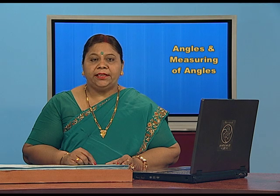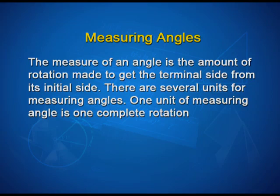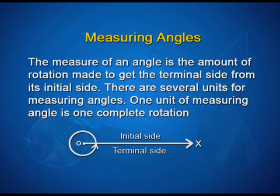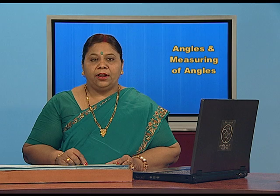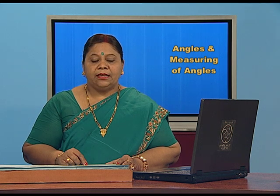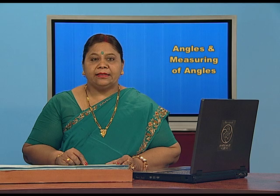Now let us study about how to measure these angles. The measure of an angle is the amount of rotation made to get the terminal side from its initial side. There are several units for measuring angles. One unit of measuring angle is one complete rotation — you can see in the figure that one complete rotation is considered as one unit.